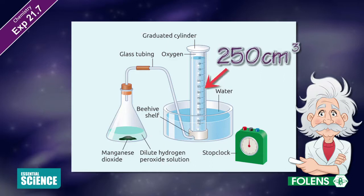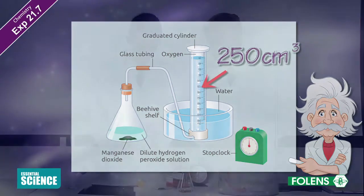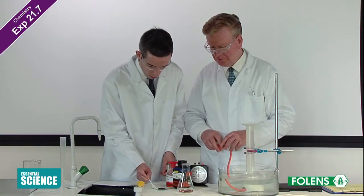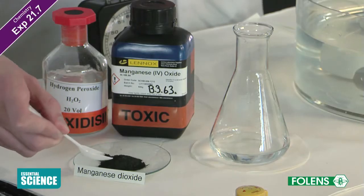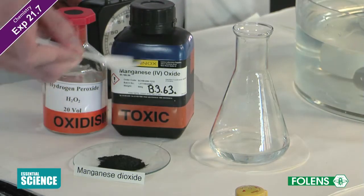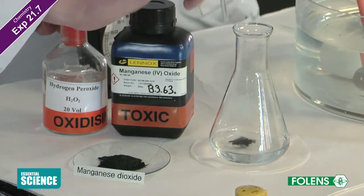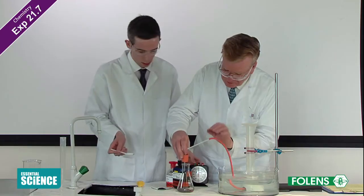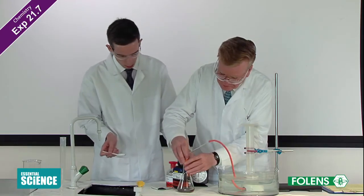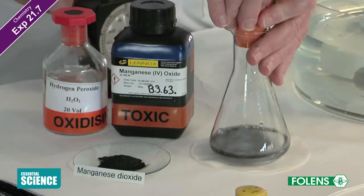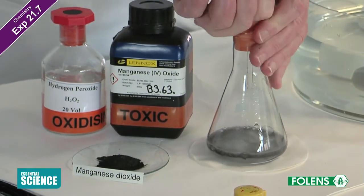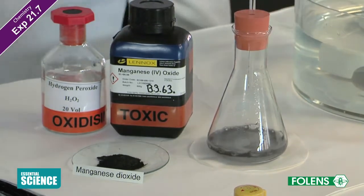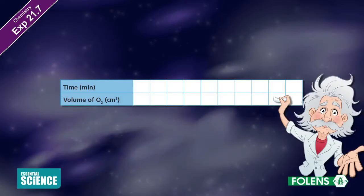Quickly add a small amount, enough to fit on the tip of a spatula, of manganese dioxide to the hydrogen peroxide in the conical flask. Immediately insert the stopper in the flask and immediately start the stop clock. Give the conical flask a brief gentle shake.